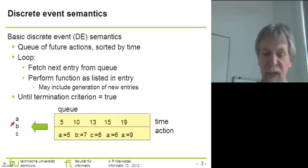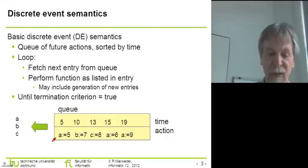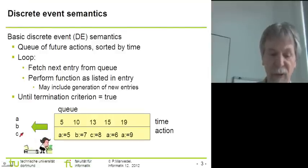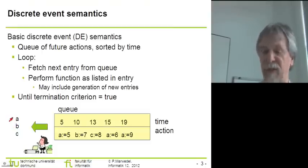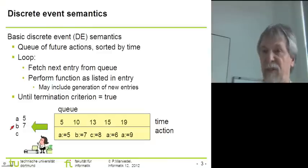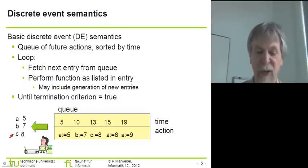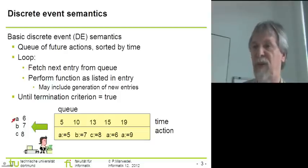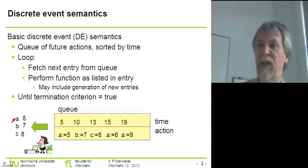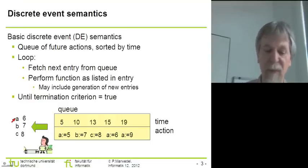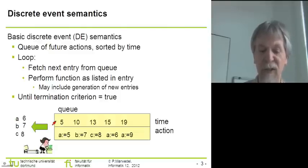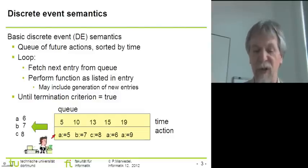Let's look at a little example. We assume there is a queue with timestamps and actions linked to each entry — in this case, only assignments to variables. We pick the next entry: first, assign value 5 to variable A; then assign 7 to B; then assign A to C; and for the fourth entry, replace the old value of A. We always pick the entry belonging to the smallest timestamp, perform the function, and possibly generate new entries in the queue.